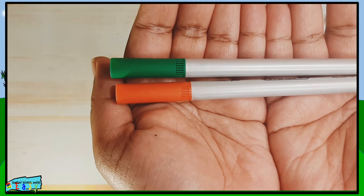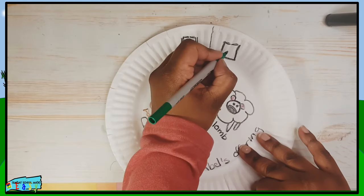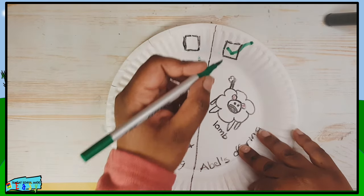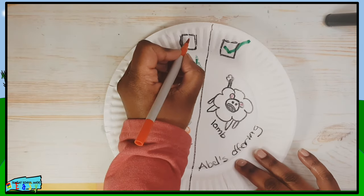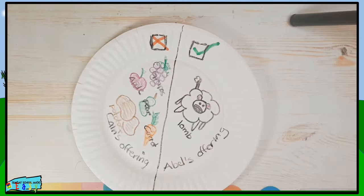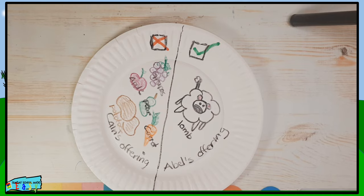So you're going to use a red and green marker and on Abel's side you're going to write a checkmark because Abel's offering was favored and Cain's was not. So it should look like this when you're all done with this simple Bible craft for Cain and Abel.